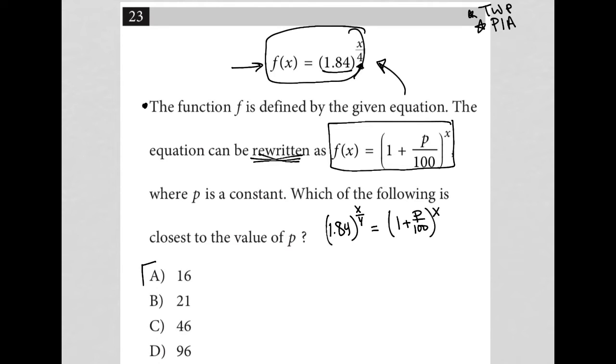All these answers represent p values, which means I can use plug-in answers. So choice A, when p is equal to 16, that means we'd have 1.84 to the x over 4th power equals 1 plus 16 over 100 to the x power. So I'm also going to use another strategy here, plugging your own number. So I'm kind of stacking these strategies. I'm going to just say, what about when x is 1? Let's just make this easy.